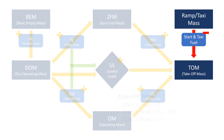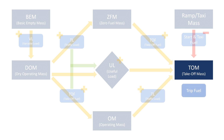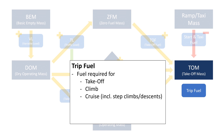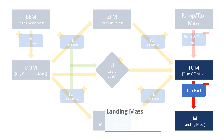And that concludes the mass definitions for takeoff. So let's take a look at the end of the flight. By then, the aircraft will have burned all of the trip fuel, which is the fuel required for takeoff, climb, cruise including potential step climbs, descent, approach and landing. Removing the trip fuel from the takeoff mass therefore gives us the landing mass at destination.